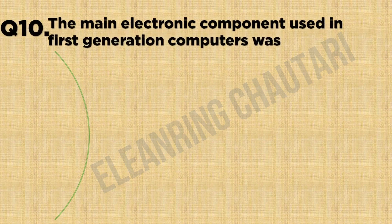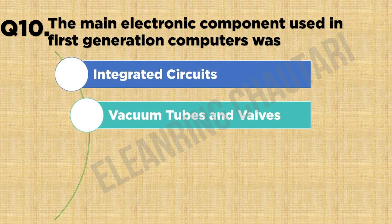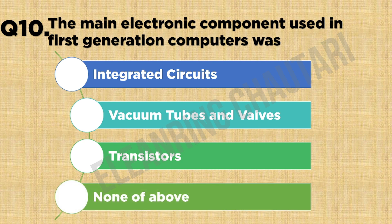Question 10: What was the main electronic component used in first-generation computers? Option A: Integrated circuits. Option B: Vacuum tubes and bulbs. Option C: Transistors. Option D: None of the above.